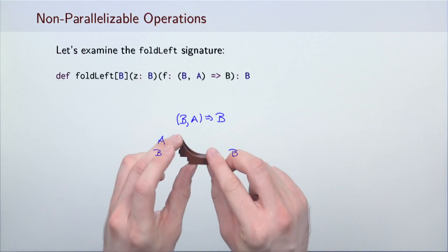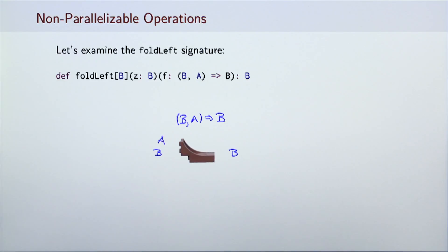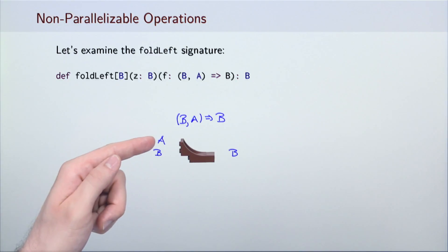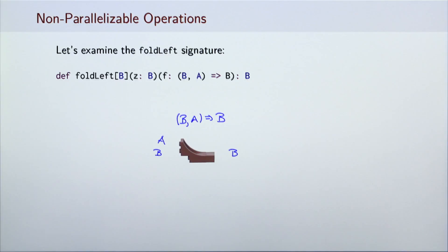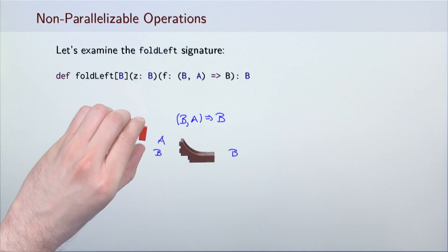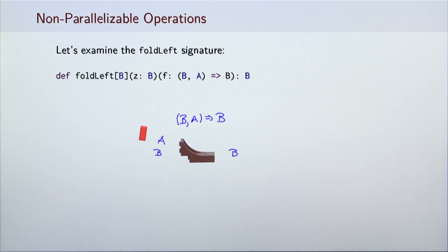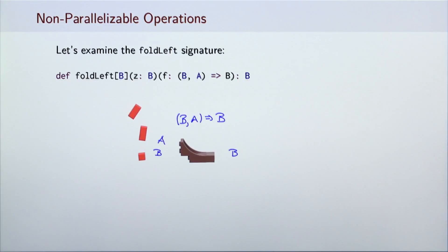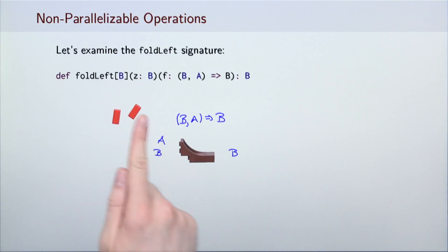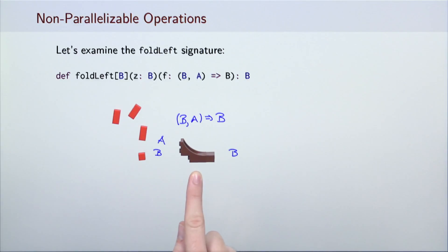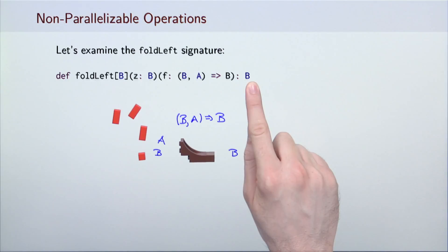The signature of the function f is a lot like a LEGO brick with two inputs and one output. We will consider the 2x1 slot to correspond to input type A and the 1x1 slot to correspond to input type B. Similarly, the 1x1 output slot corresponds to output type B. The collection element type A corresponds to the 2x1 slot and can be represented with a roof brick. The neutral element has type B, which is a 1x1 slot.